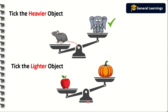Next they have given: tick the lighter object. Here they have given an apple and a pumpkin. Lighter means the weight of an object should be less. While comparing these two pictures, which weight will be less — apple or pumpkin? Yes, the apple's weight will be less while comparing to the pumpkin, so we are going to mark the apple as the lighter object.